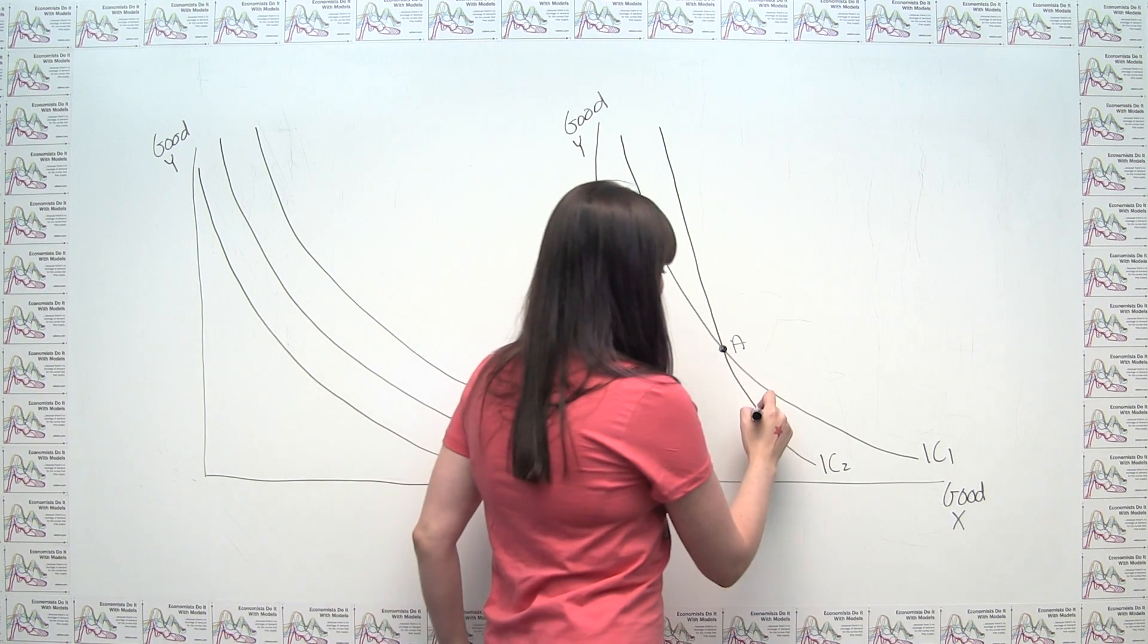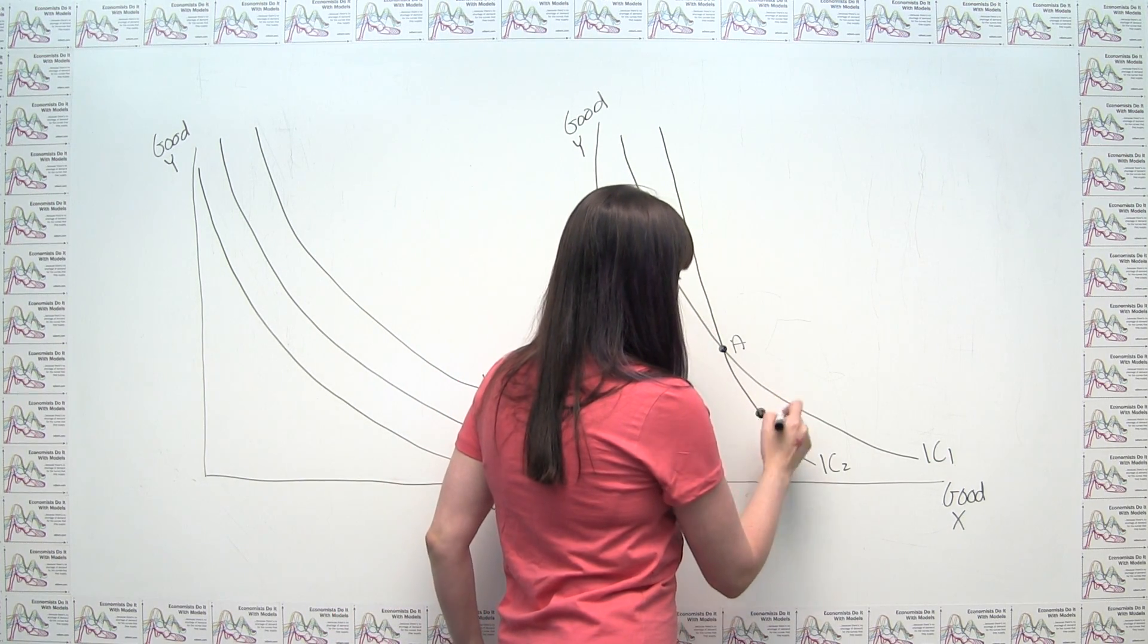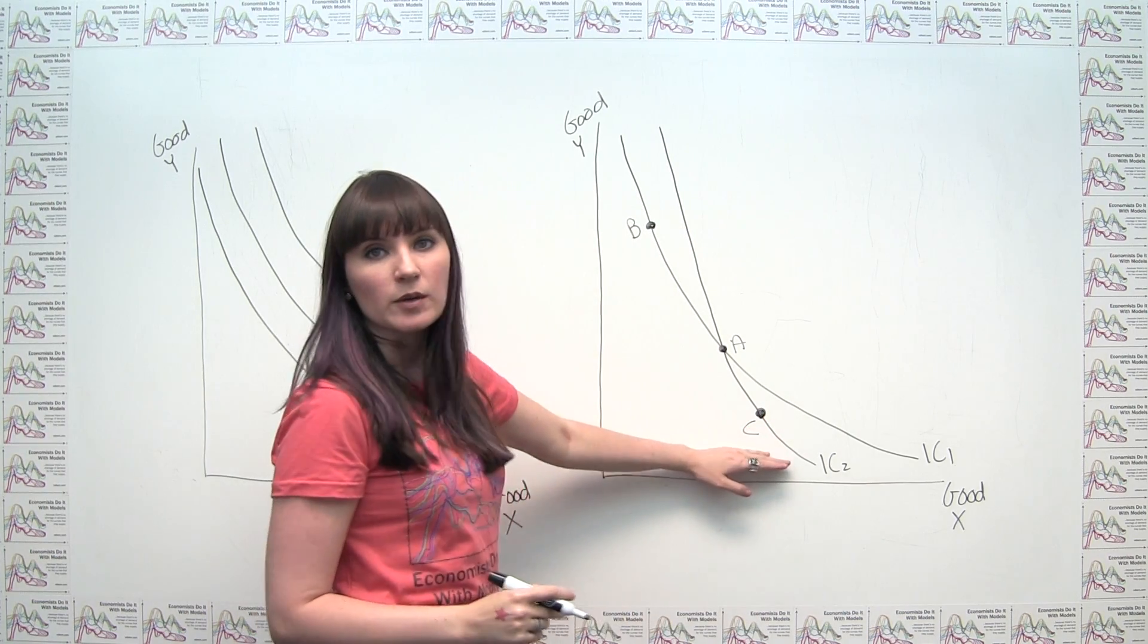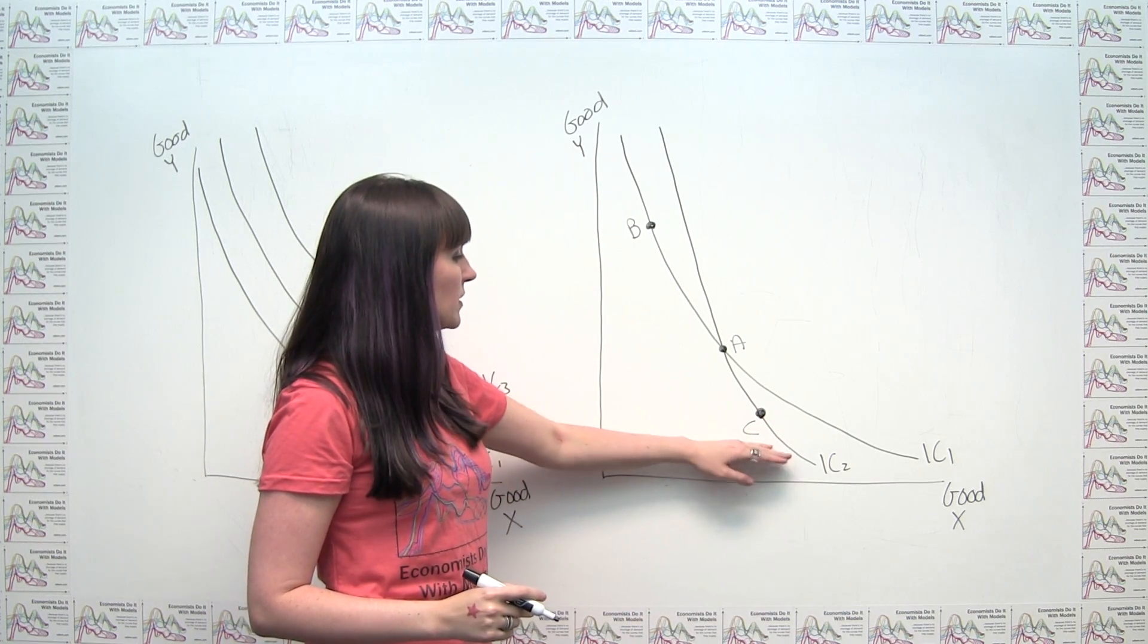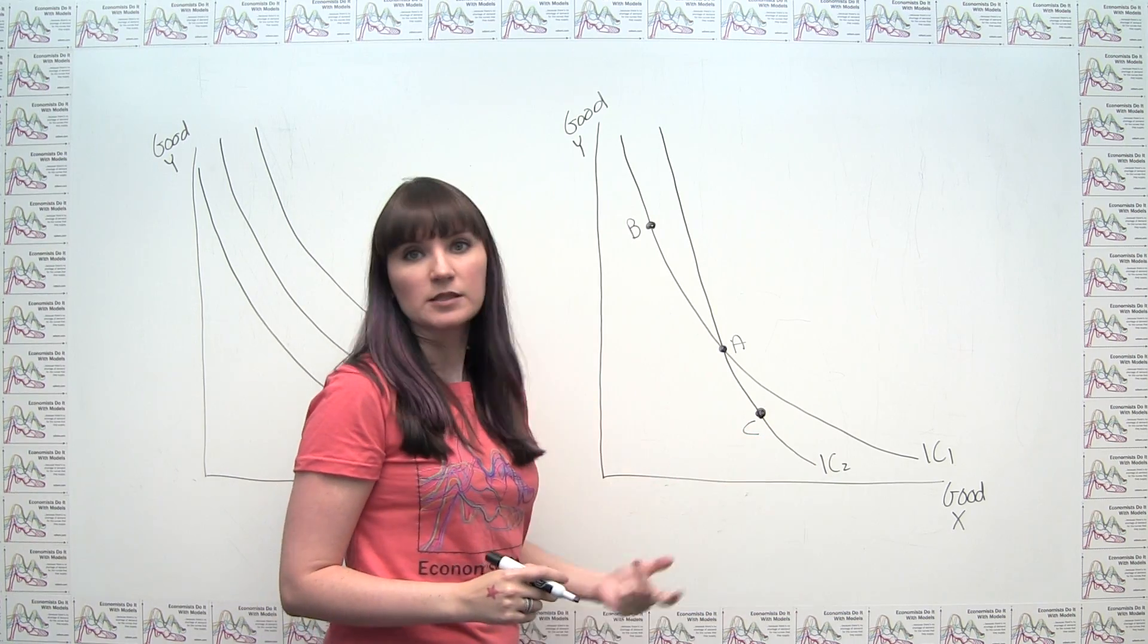And then point C, again picking an arbitrary point, but now I'm picking an arbitrary point that's on the other indifference curve. Here we've called that IC2.